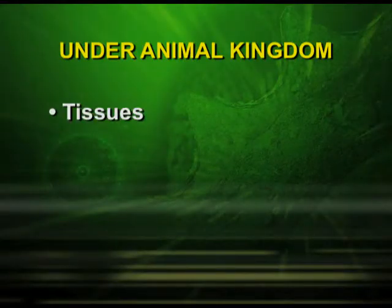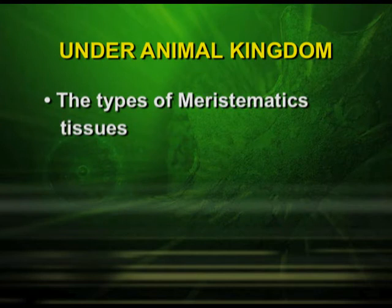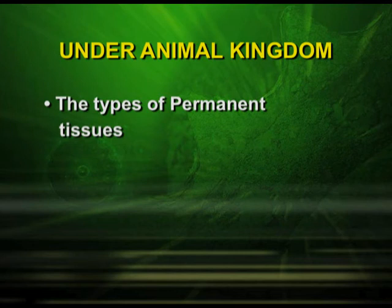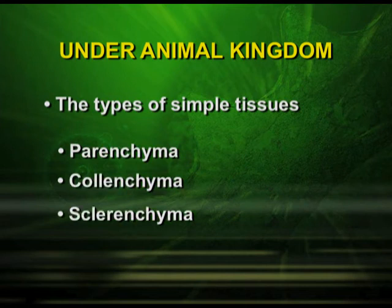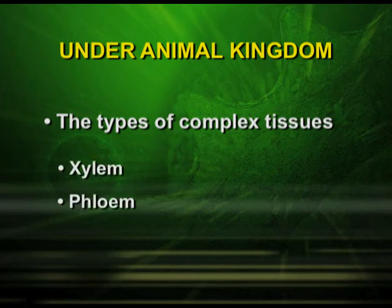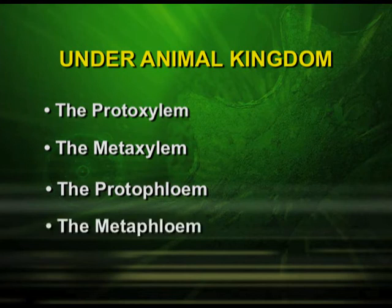Let us have a quick look at what we studied in this chapter: tissues and their types — meristematic and permanent. Meristematic tissues are apical, intercalary, and lateral. Permanent tissues are simple and complex — simple tissues include parenchyma, colenchyma, and sclerenchyma; complex tissues include xylem and phloem. We also studied protoxylem, metaxylem, protophloem, and metaphloem. In the next episode, we will continue with the tissue system, its classification, and the anatomy of dicot root, monocot root, dicot stem, monocot stem, and secondary growth.